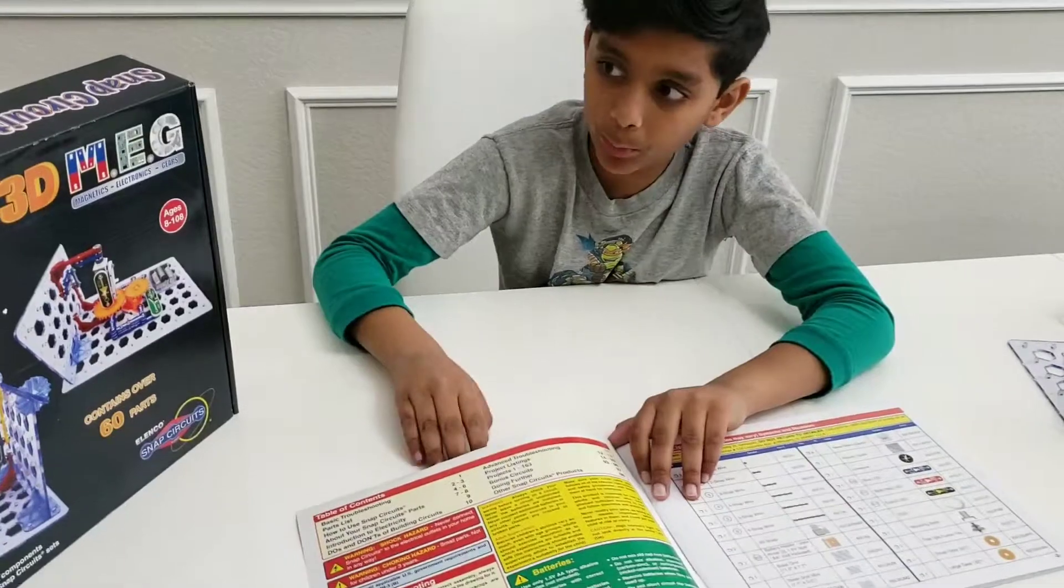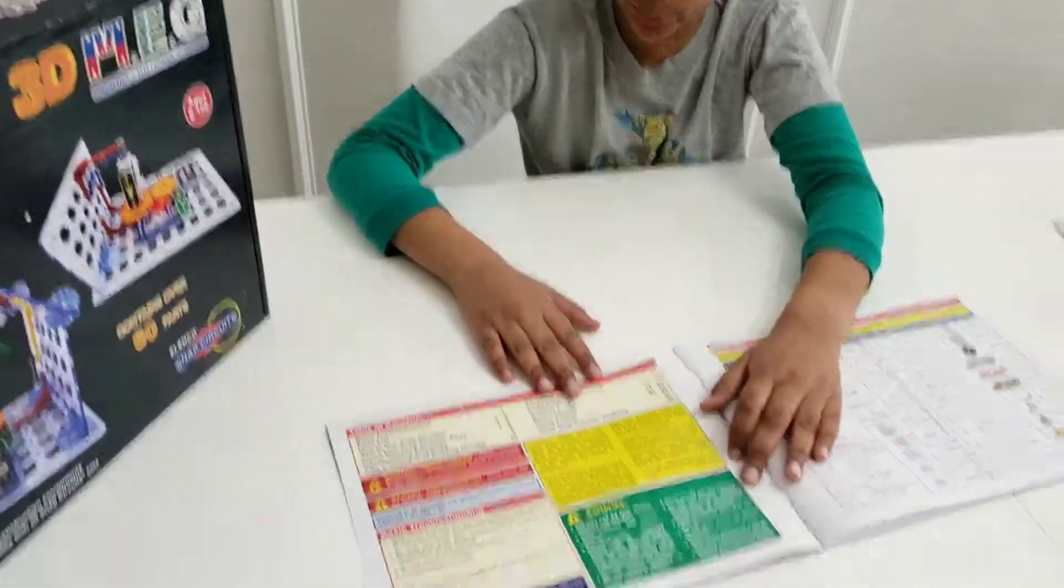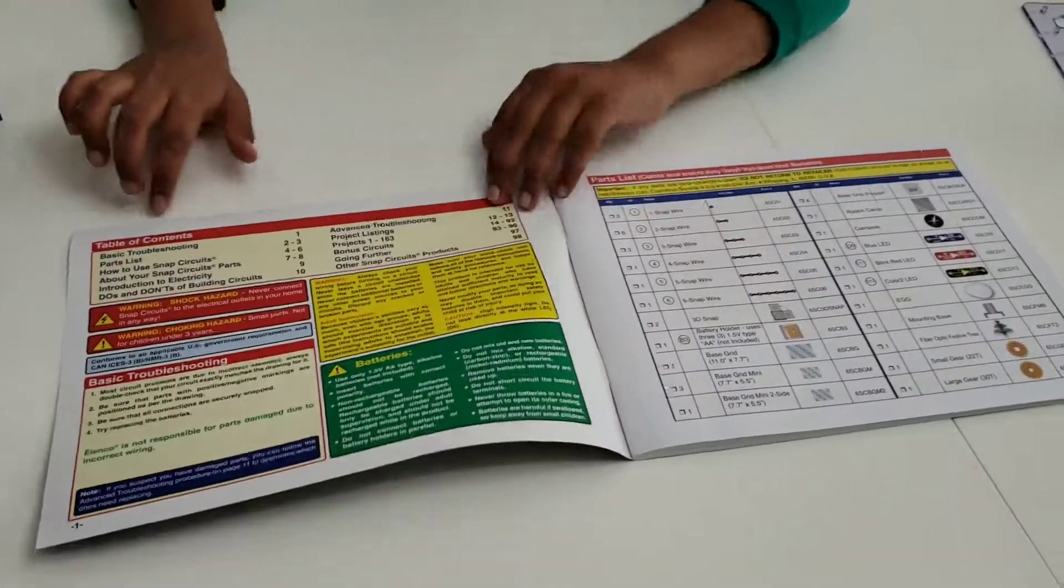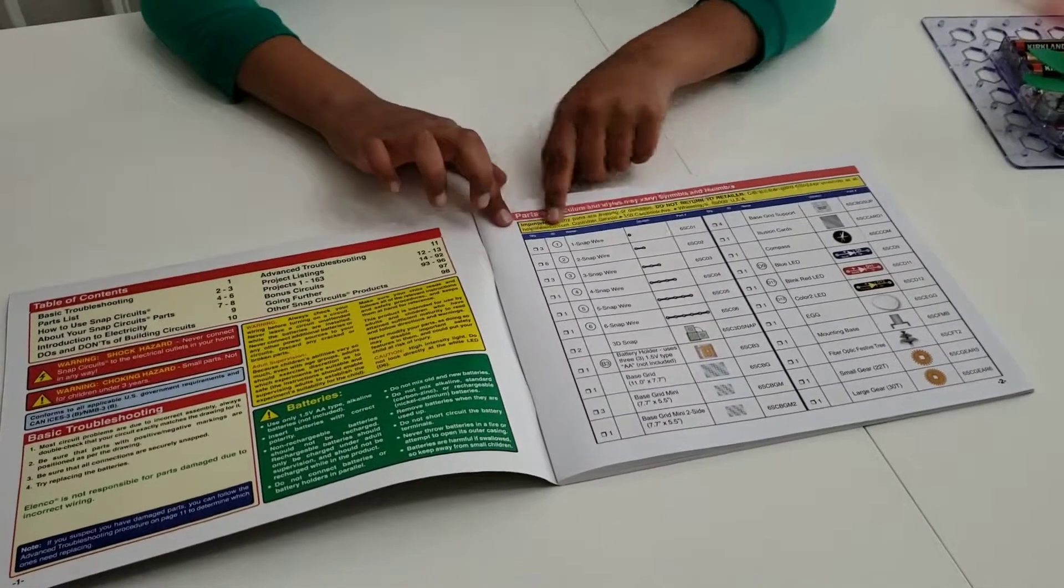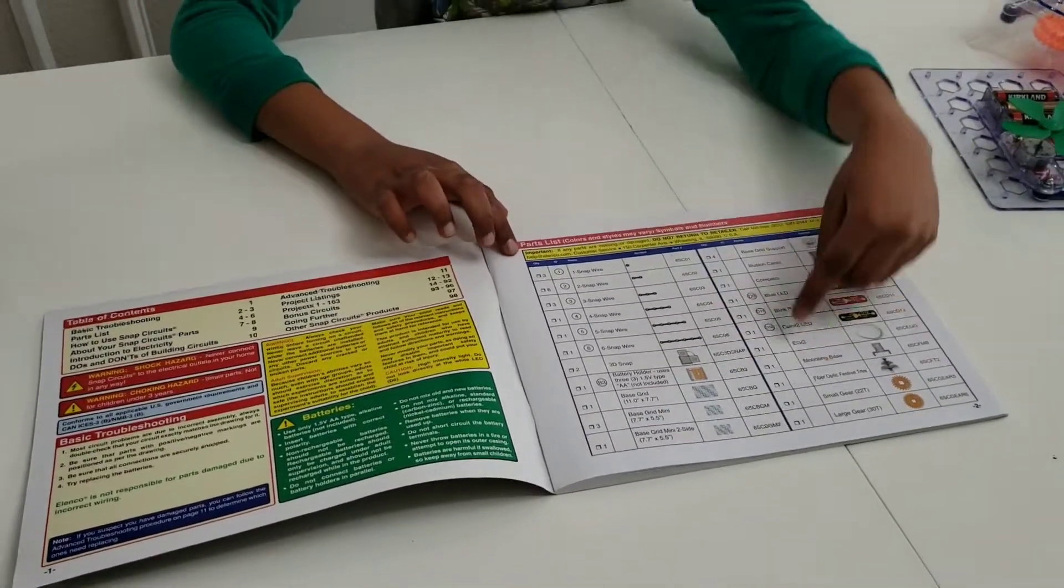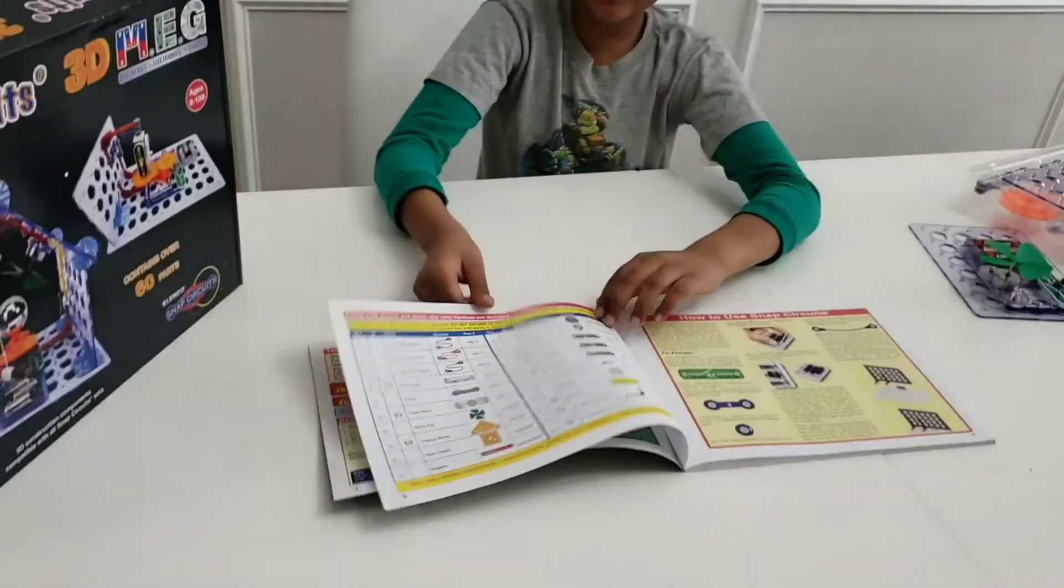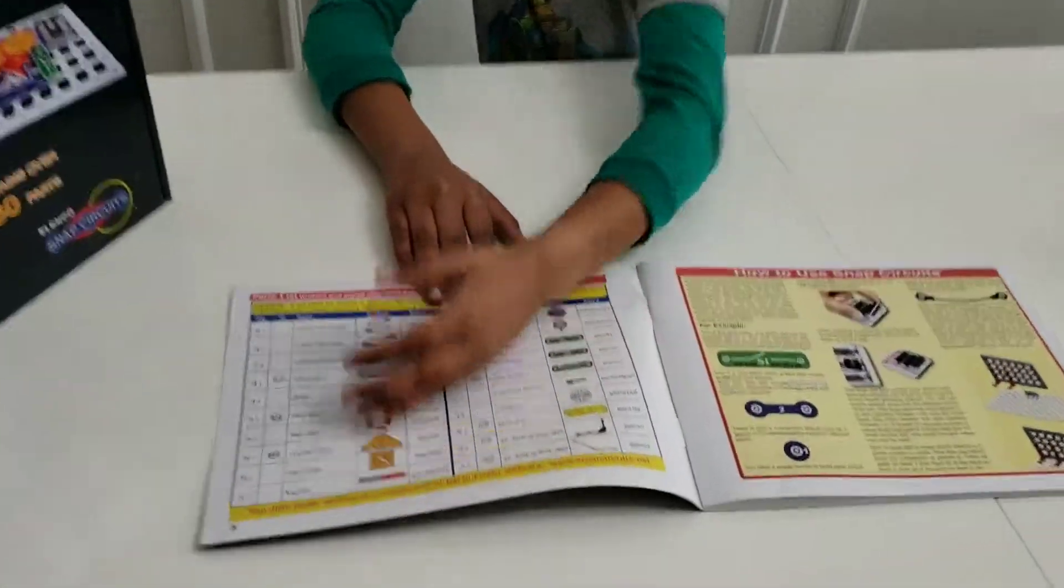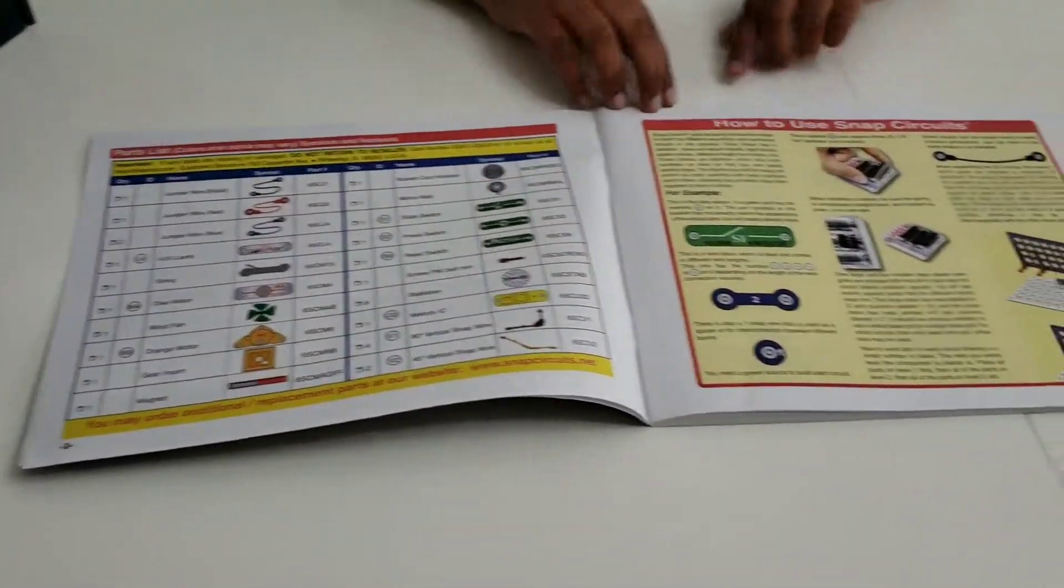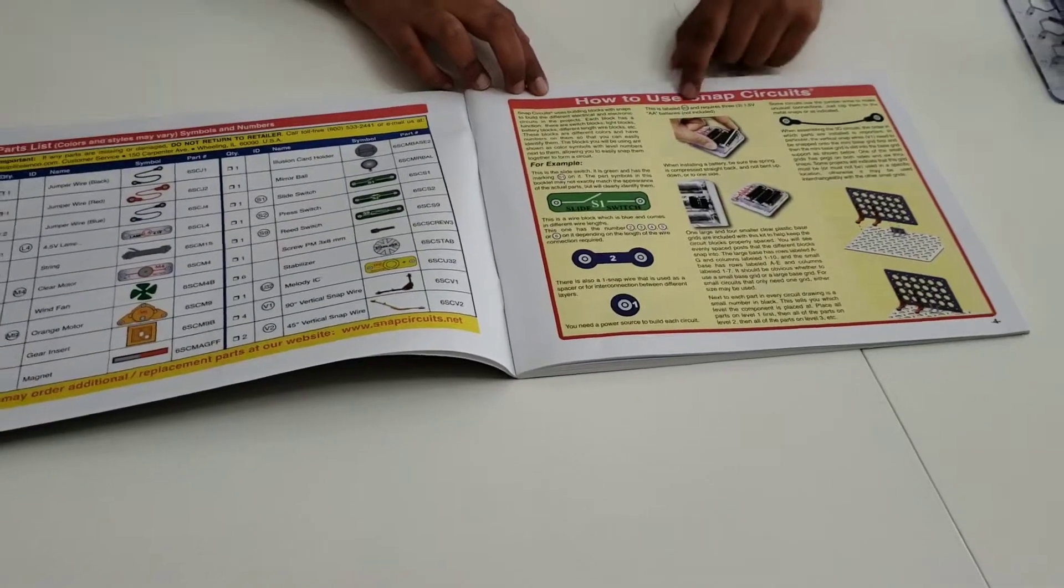Just like the Snap Circuits Brick Structures Instruction Manual, this has a table of contents, a list of every single piece, and how many of each piece there are. Then, it has the rest of the pieces, and then right here it shows how to use the Snap Circuits.